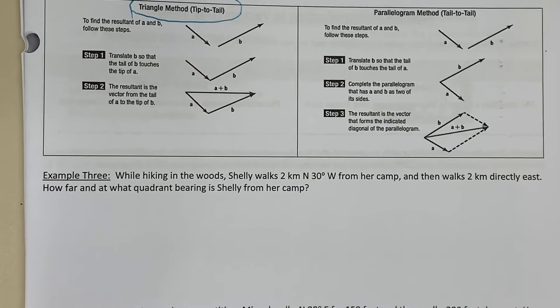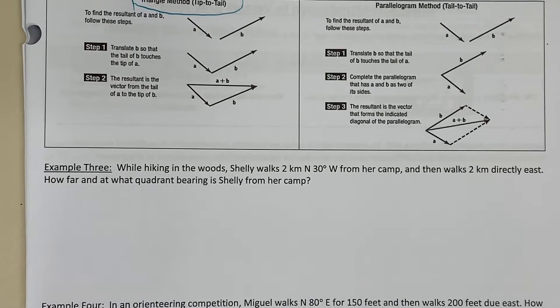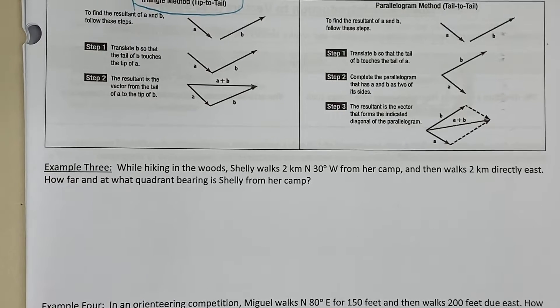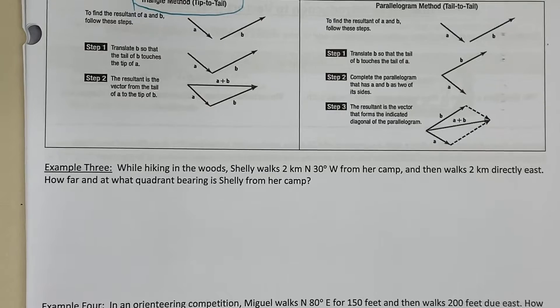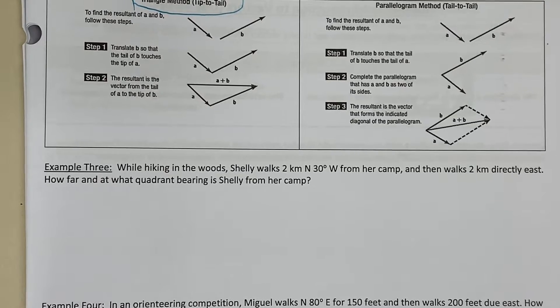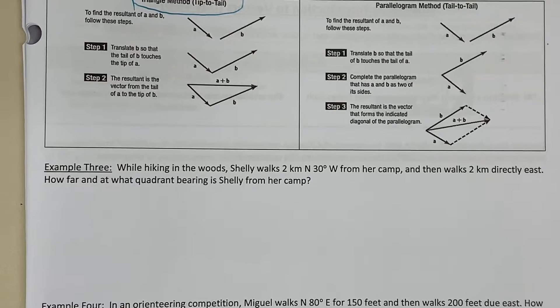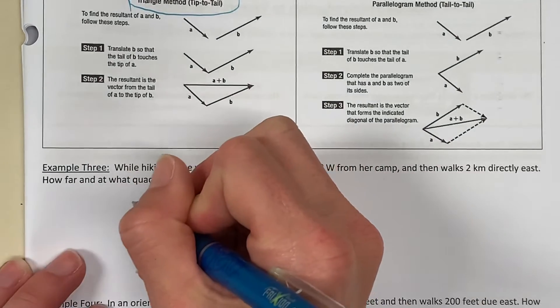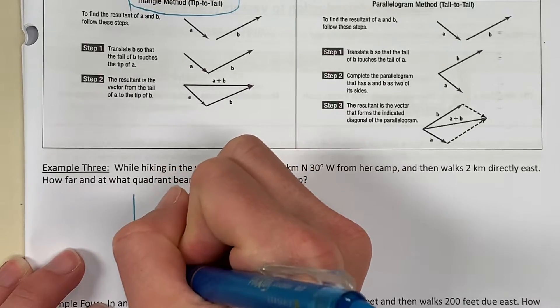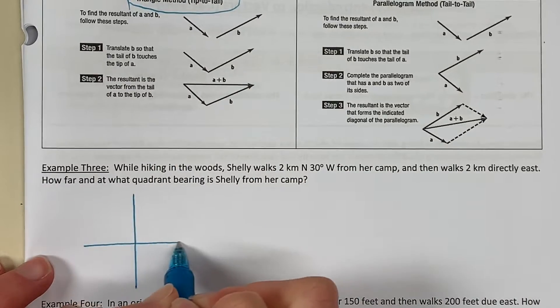It says, while hiking in the woods, Shelley walks two kilometers north 30 degrees west from her camp and then walks two kilometers directly east. How far and at what quadrant bearing is Shelley from her camp? The first thing that we are going to do is sketch a coordinate plane and we are going to sketch this picture.